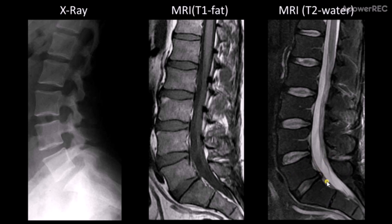We can get a sense of the discs on X-ray. Here we have the bones in the lumbar spine with nice, healthy, wide disc spaces — and then you can see this one has narrowed. The L5 disc here is the same as this one. But of course, in order to see the nerve roots, we need soft tissue imaging: MRI.